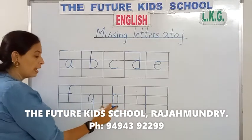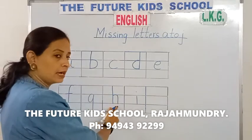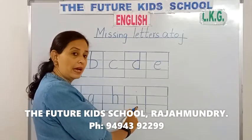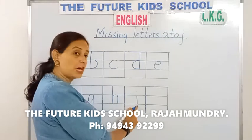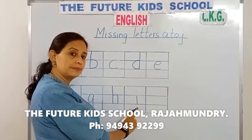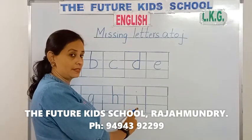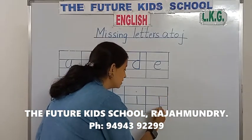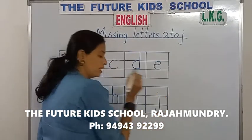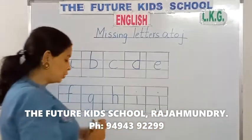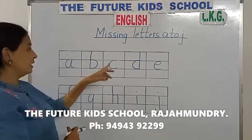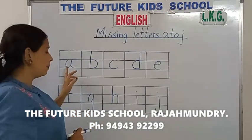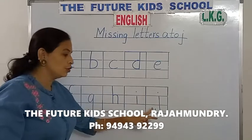H. And what letter comes after H? The letter I. And what comes after I? Yes, the letter J. Small letter G. Good.